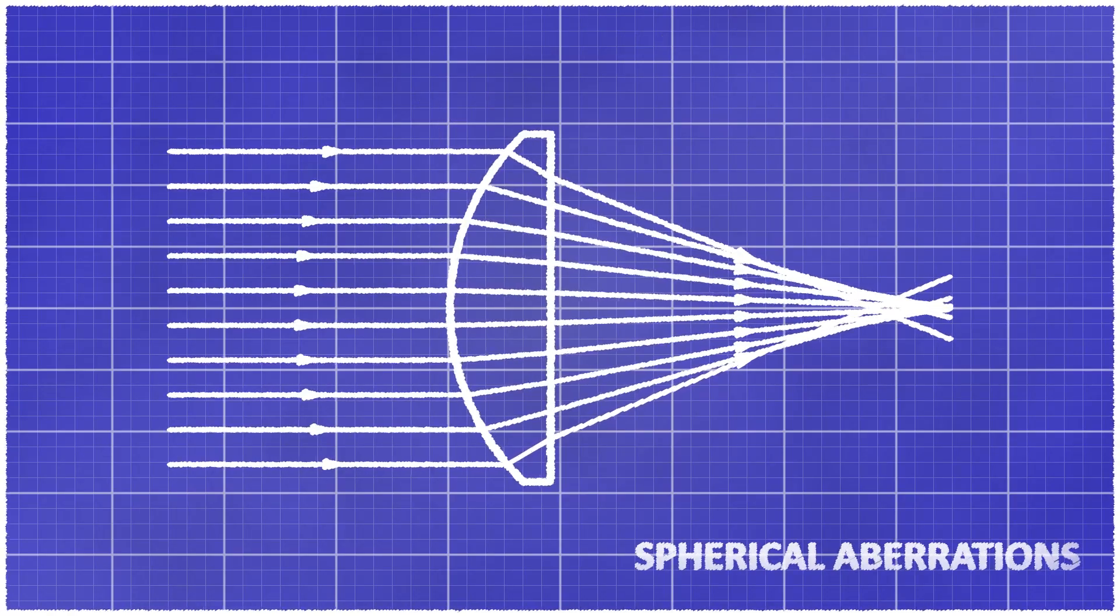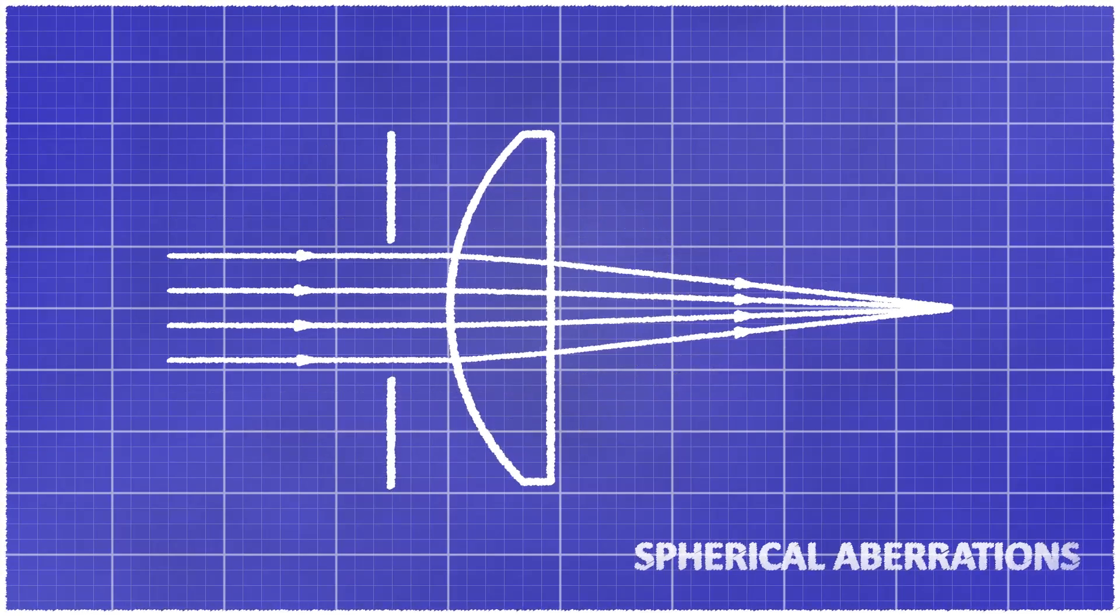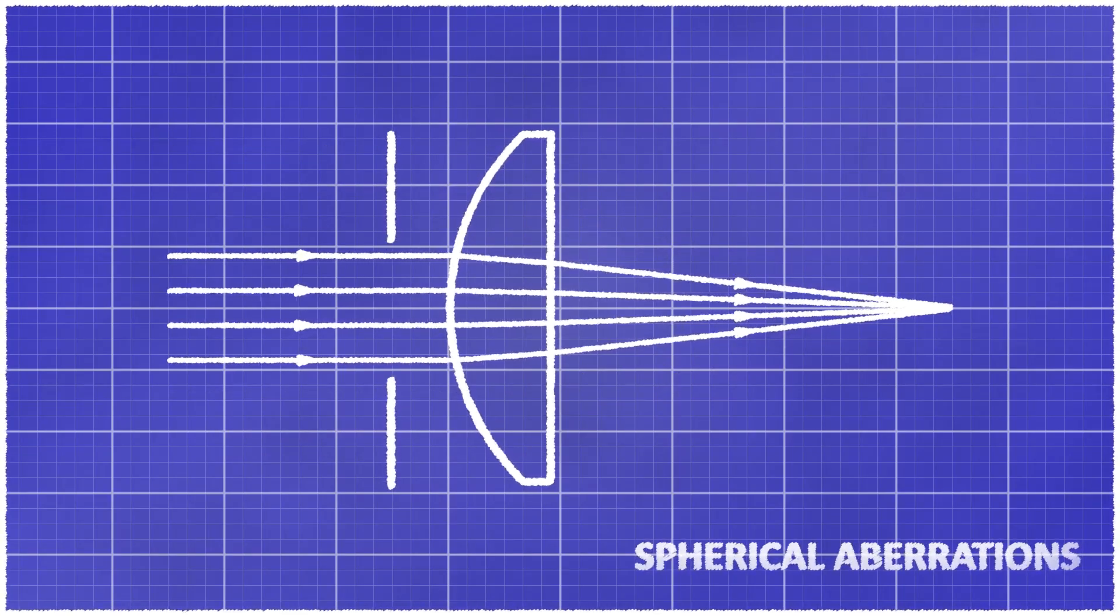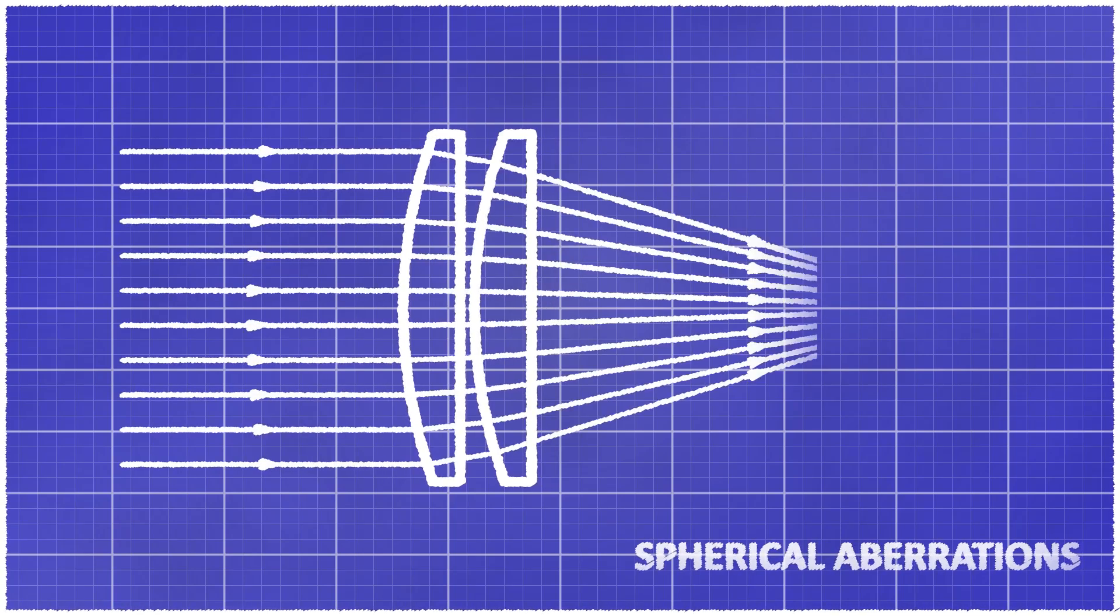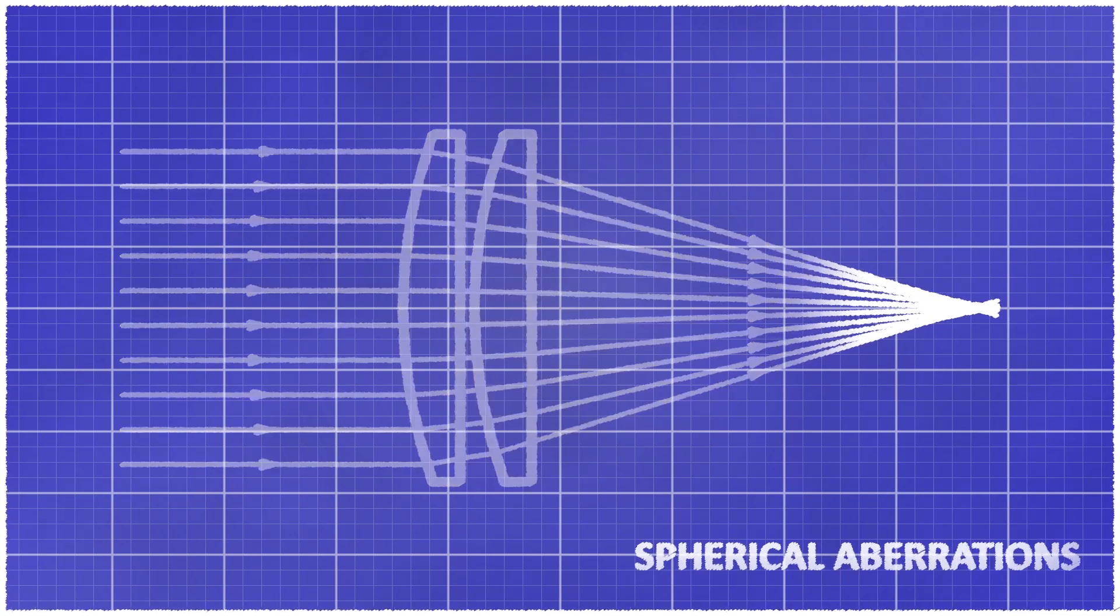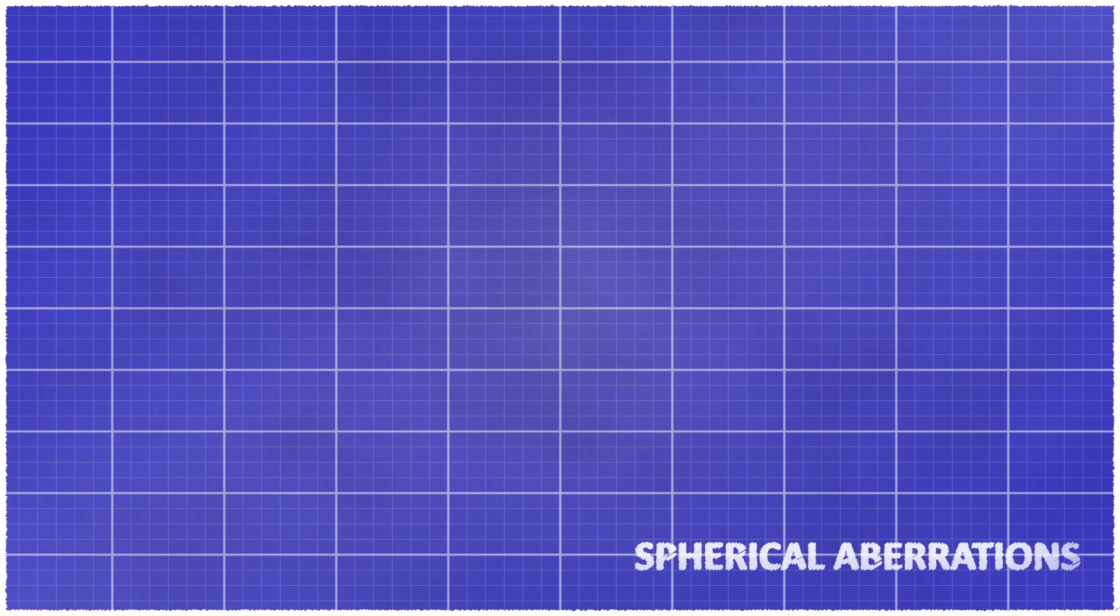There are two ways to limit spherical aberration. Either you place an aperture in front of the lens to limit the angle between the rays and the surface, or you split the power of the lens by using two lenses instead of one. Each lens will refract rays by a smaller amount leading to reduced spherical aberration.